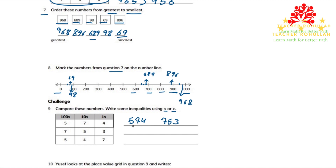When we compare numbers, we start with the biggest place. The biggest place here is the hundreds place. In the first number, the hundreds place is five. In the second number, the hundreds place is seven. So 753 is bigger than 574. We use this sign and say that 574 is less than 753.